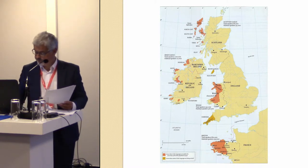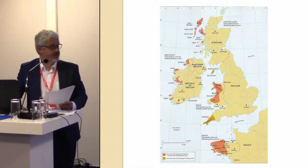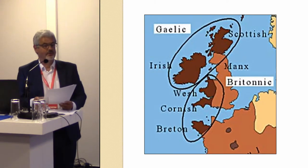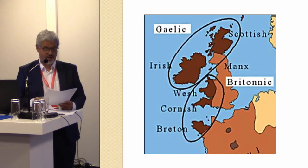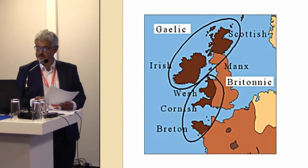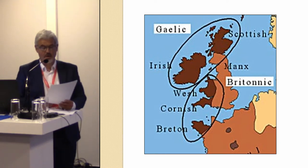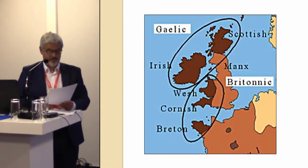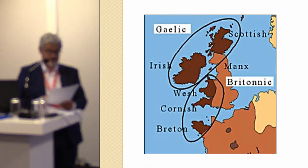So this was the fairly recent distribution of those, and we have basically the P-Celtic and Q-Celtic groups. I'm just going to be talking about that lower oval — the Welsh, Cornish and Breton.